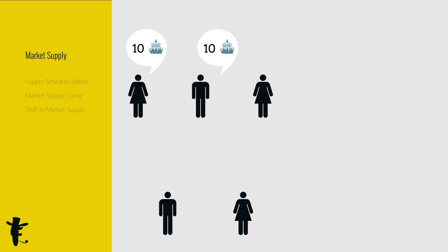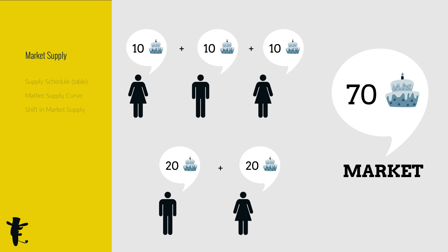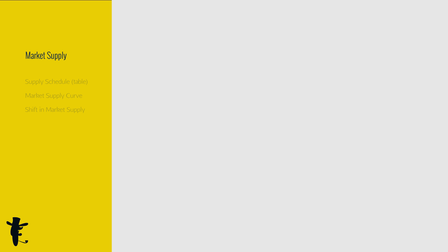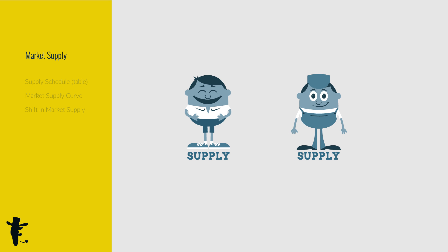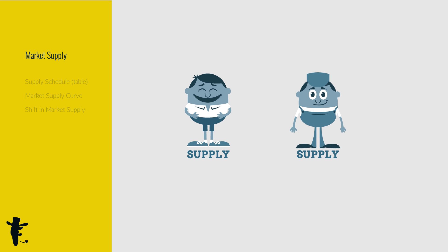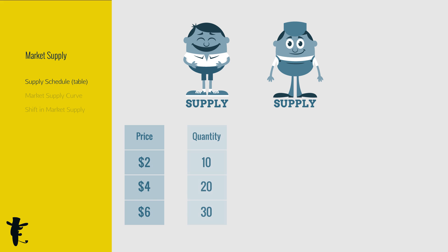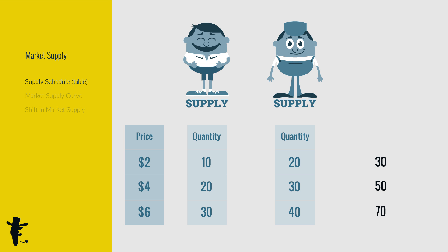Same with how we derive the market demand, we can add up all the individual supply curves and get the market supply. Suppose in our market there are only two producers, John and Tom. These are their supply schedules for cakes. Add up the cakes at every price and this is our market supply schedule.